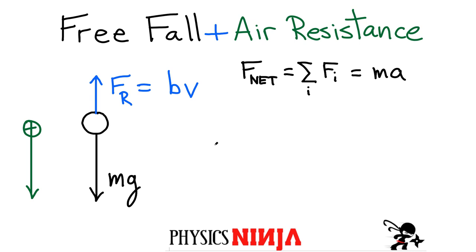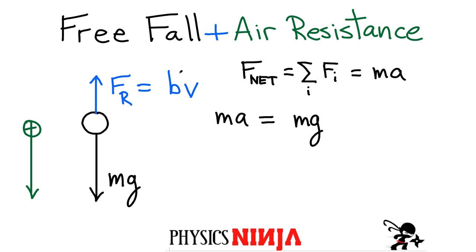The sum of forces includes two terms: the weight and the resistive force, and both are in opposite directions so we have to be careful. Starting with ma on one side, I add up all the forces: the force acting down is the weight mg, and the resistive force acting up is minus B times V. This is Newton's second law: mass times acceleration equals mg minus Bv.